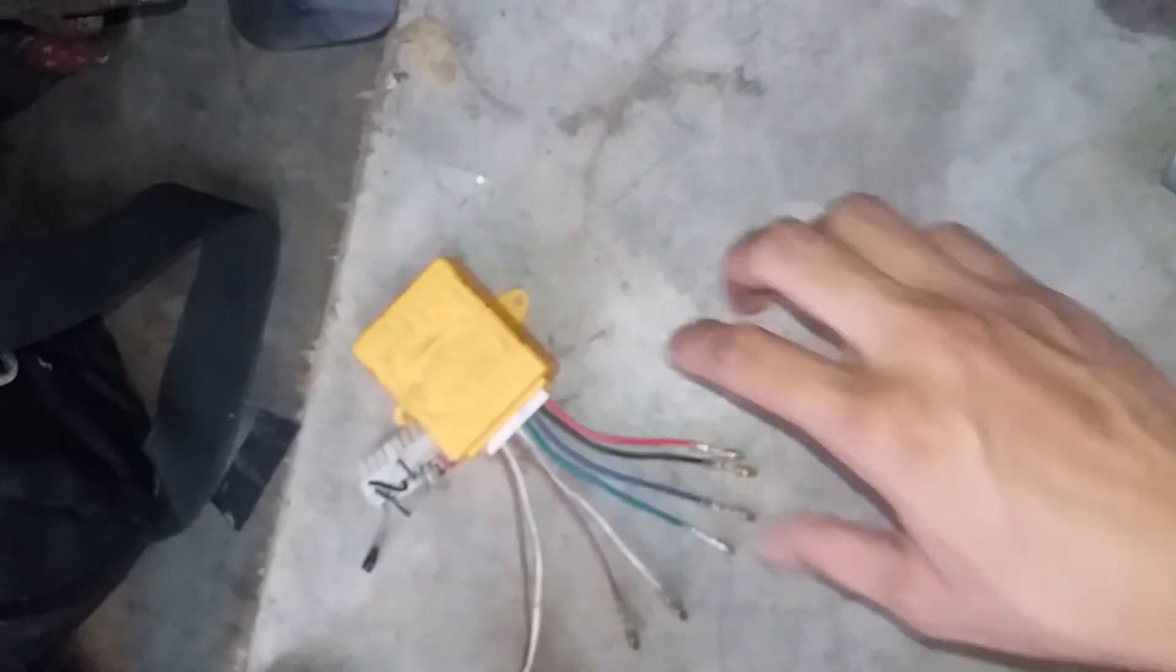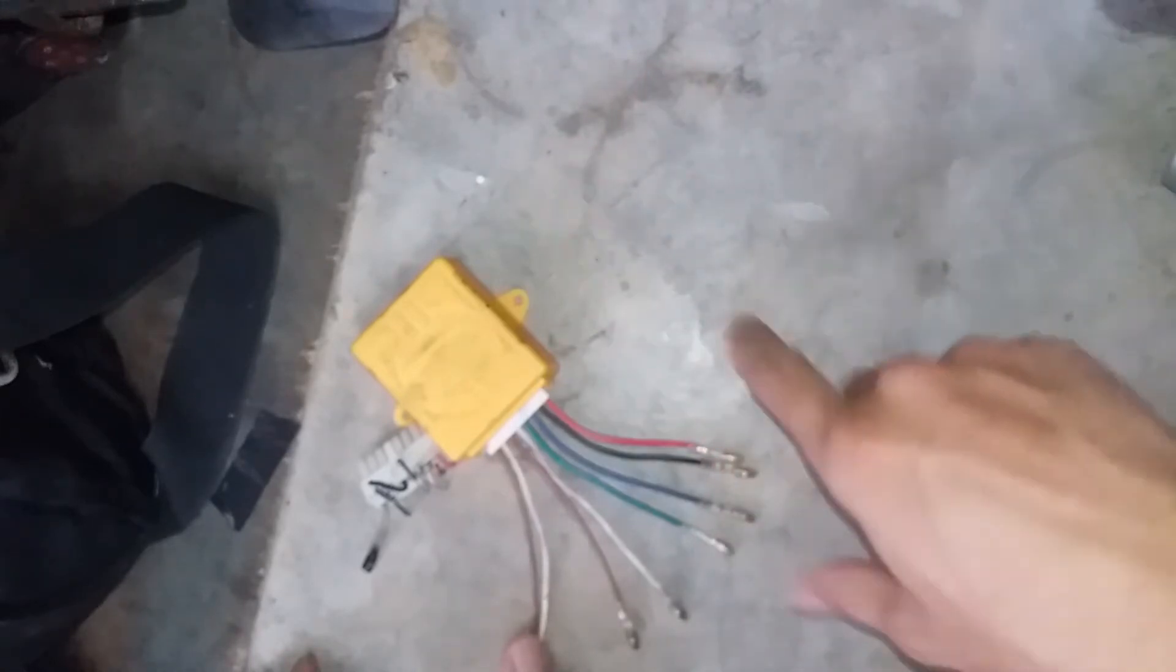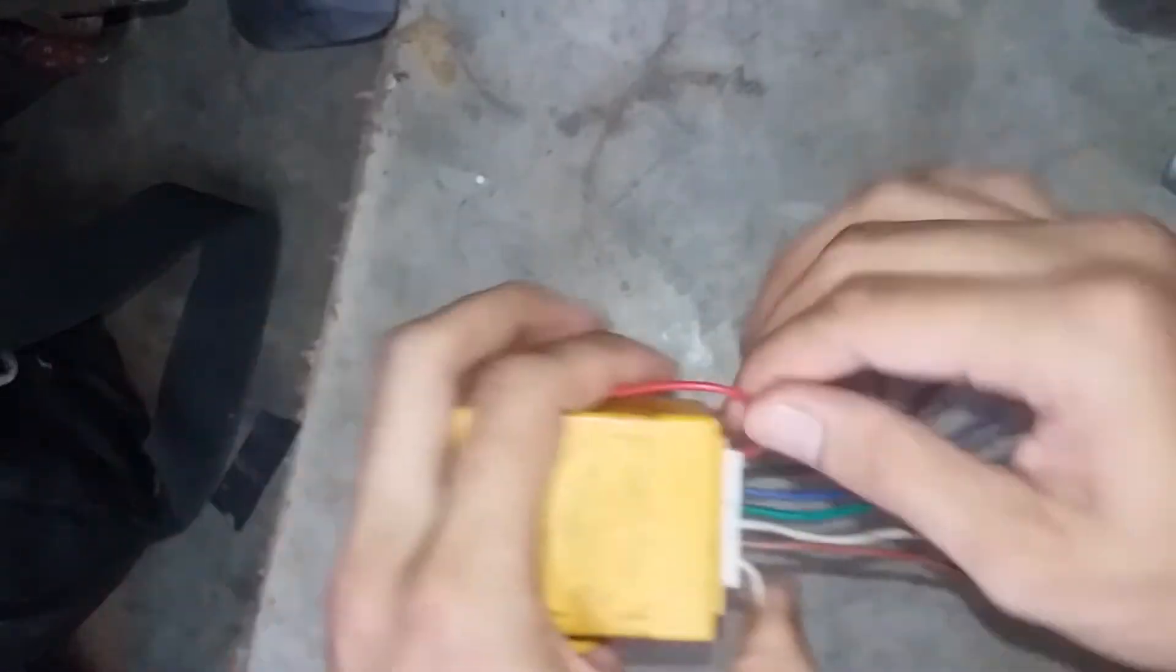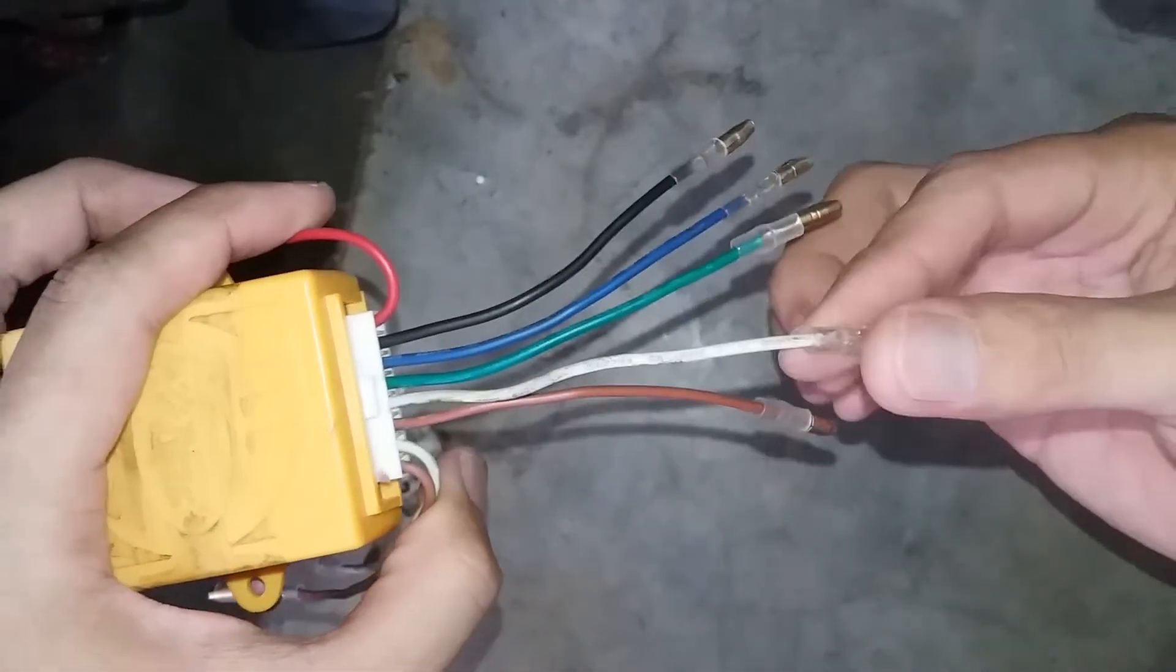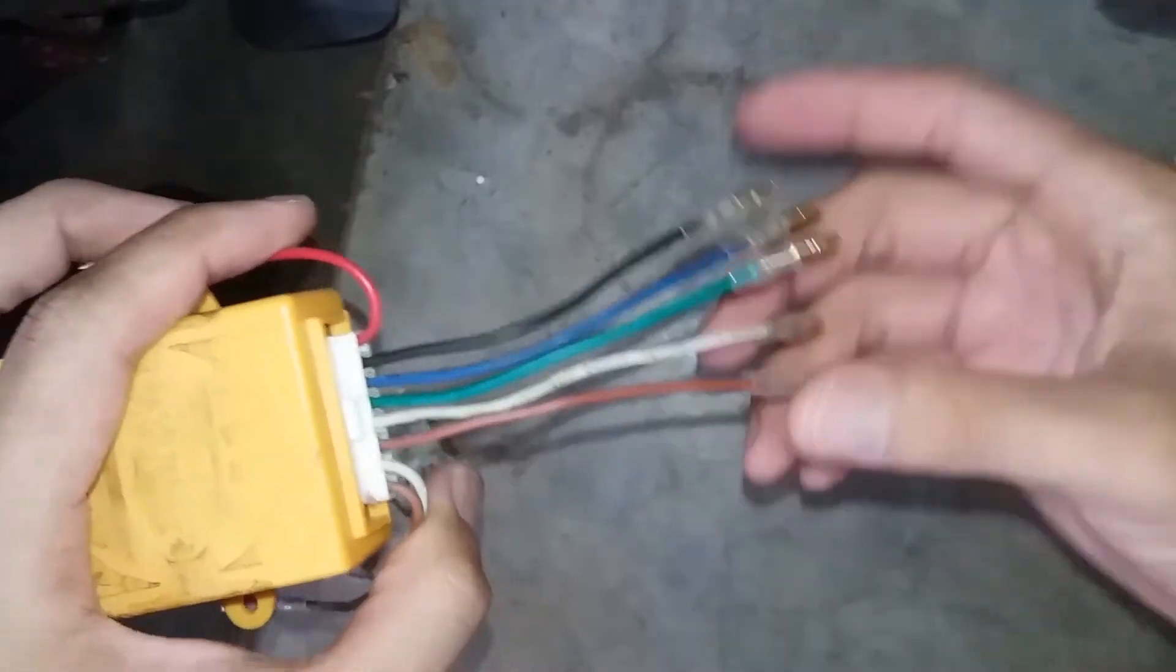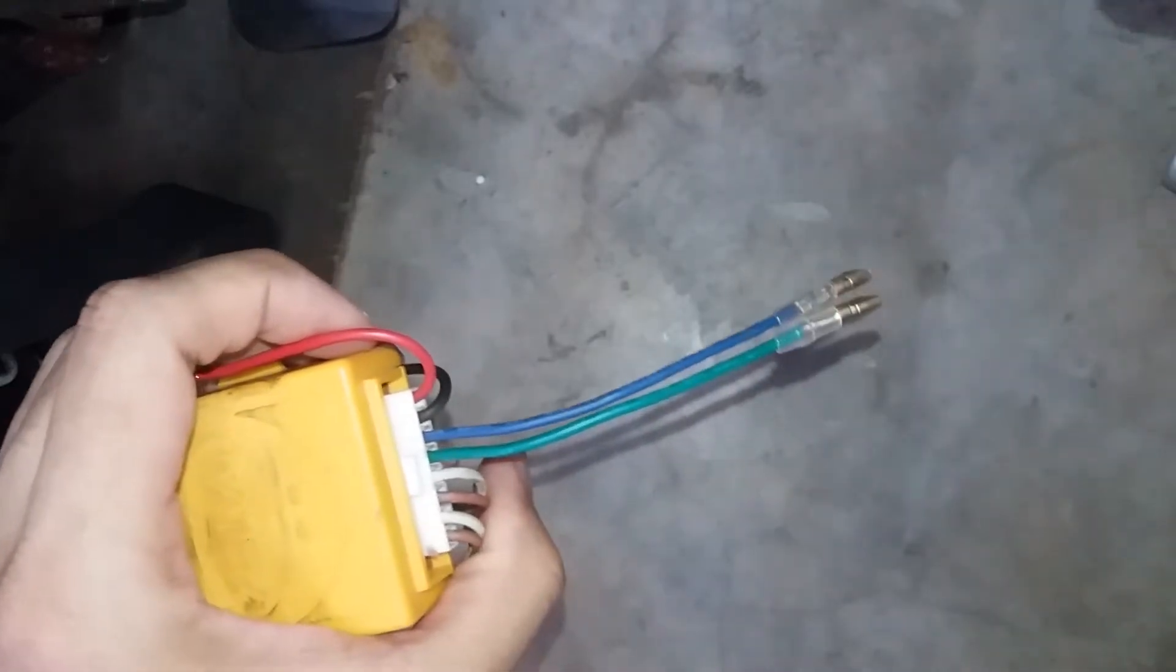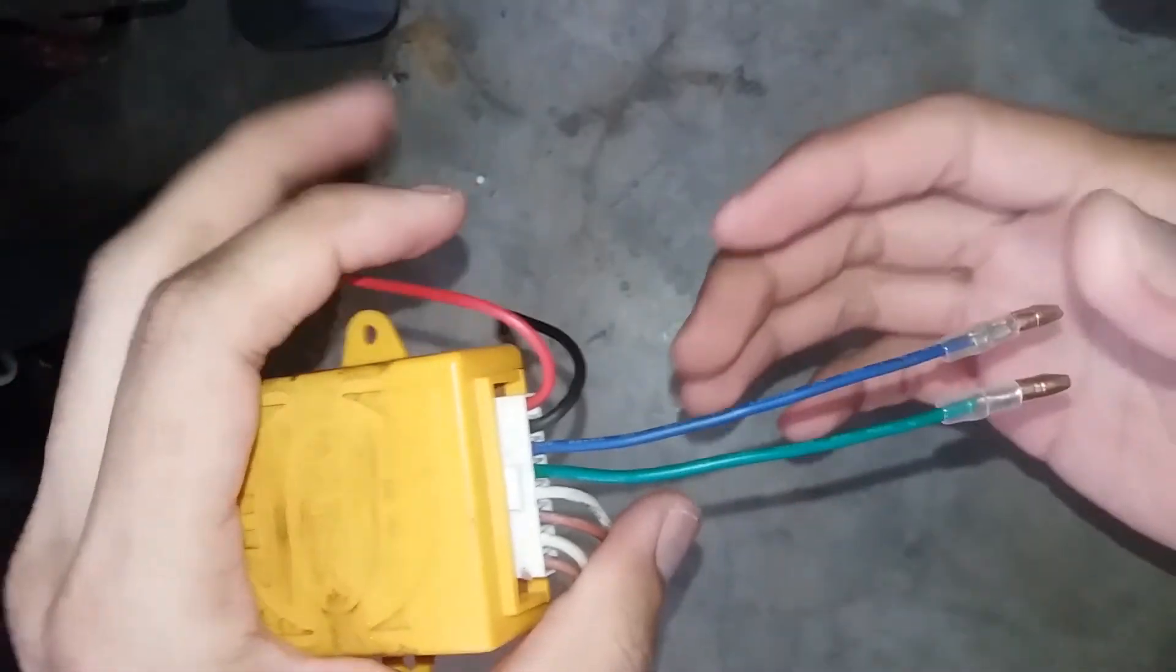If you search Google, the actuator on the driver side has five wires. On the left driver side and rear passenger side, it has two wires each. The five wire one is this one on the driver side: black, blue, green, white, and chocolate. On the back and front passenger side, they only use these two wires.